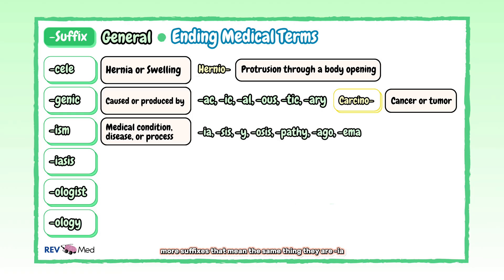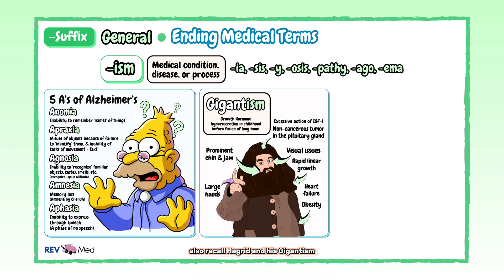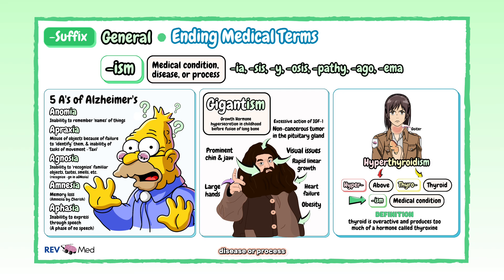For "-ism", we'll also note more suffixes that mean the same thing: "-ia", "-sis", "-e", "-osis", "-pathy", "-ago", and "-ema". You'll recall at RevMed we spoke about the five A's of Alzheimer's — they're all "-ia's" — and you can use this as a refresher to brush up on medical terms. You can also recall Hagrid and his gigantism, which is a growth hormone hypersecretion during childhood. For "-ism", we can always see goiter in patients with hyperthyroidism — our prefix "hyper", root word "thyroid", and suffix "-ism" for medical condition, disease, or process.